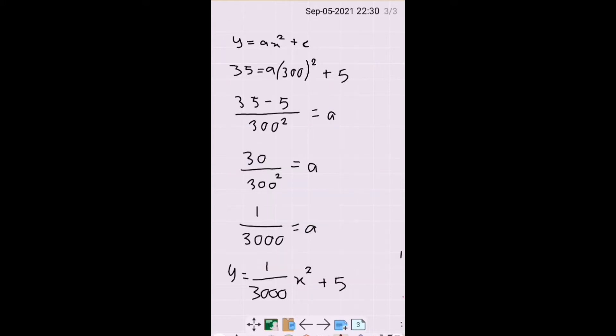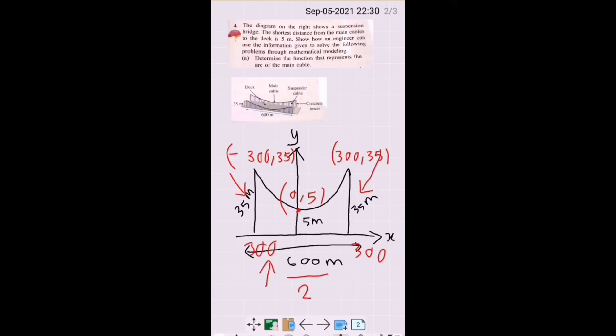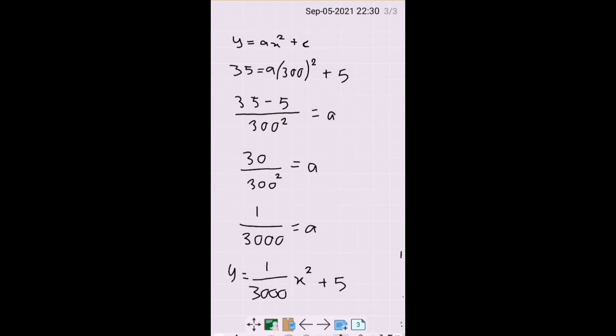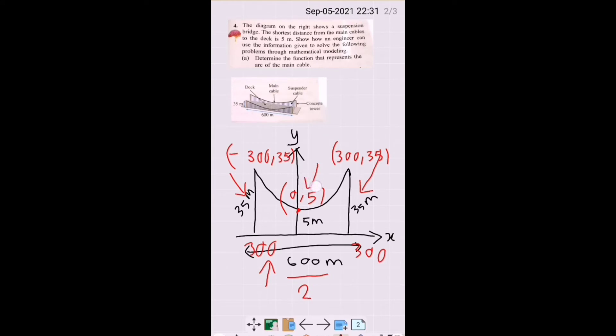And next we are going to use the equation y equals ax squared plus c. So in the diagram we have positive and negative but we are going to use the positive value. So we have positive 300, 35. And we label as x and y. So now we just substitute into the equation: y is 35 equals a times x is 300 squared plus 5. So 5 is our c and c is y-intercept and we have our y-intercept here.